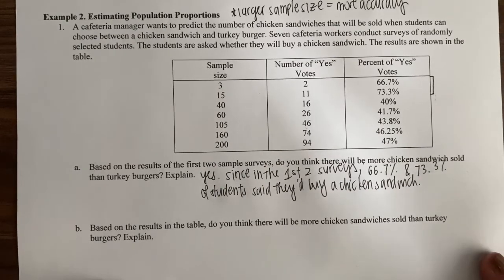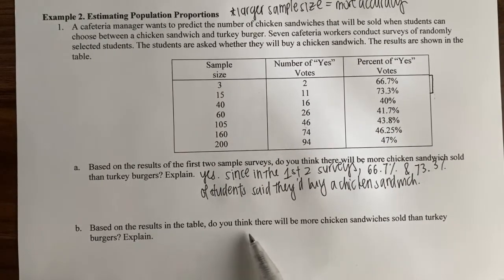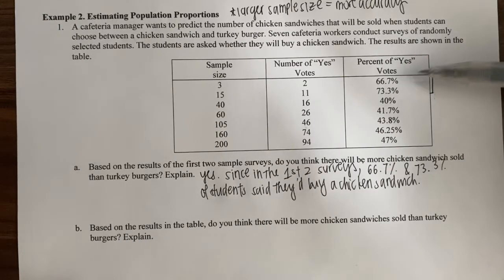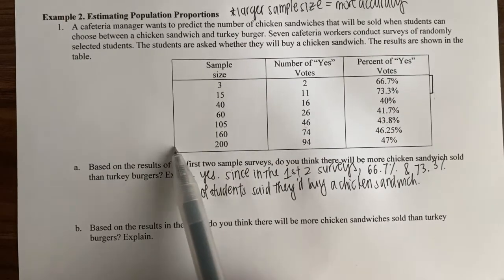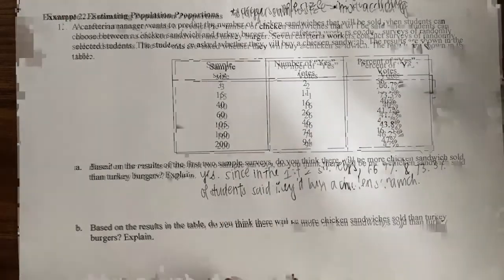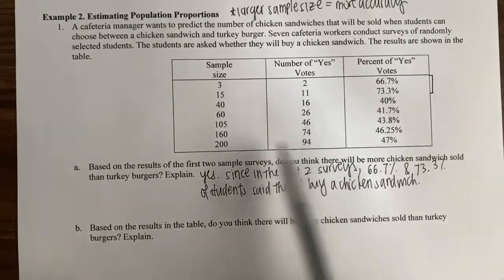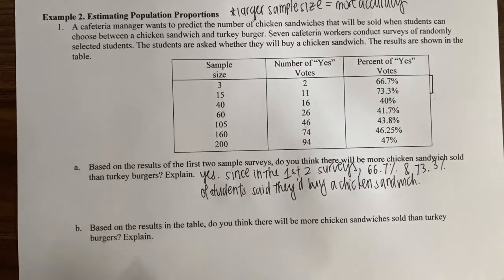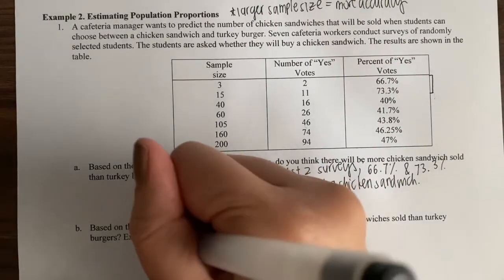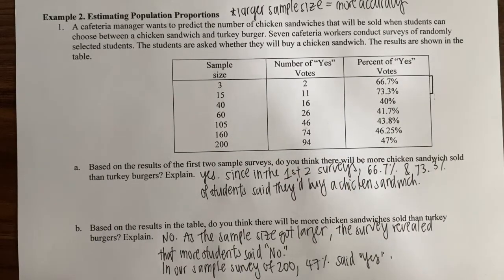Now for part B, based on the results in the full table, do you think there will be more chicken sandwiches sold than turkey burgers? Looking at the table, we can see that as our sample size increased, the number of yes votes actually decreased. Looking at our sample size of 200, which is our largest — recall, larger sample size equals more accuracy — around 47% of the 200 students surveyed said yes. So the answer is no. As the sample size got larger, the survey revealed that more students said no. In our sample survey of 200, 47% said yes.